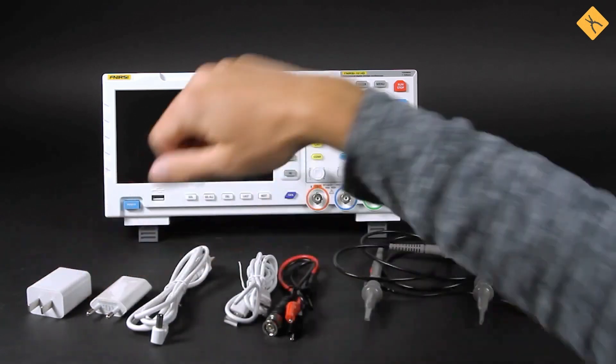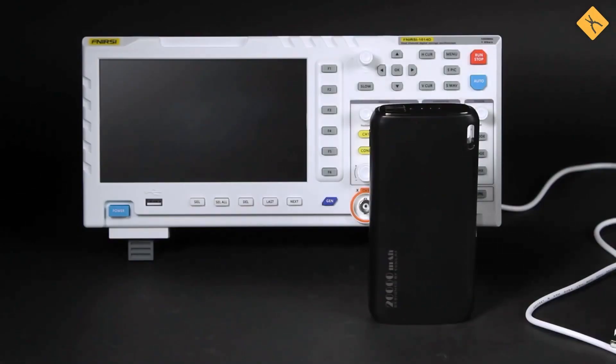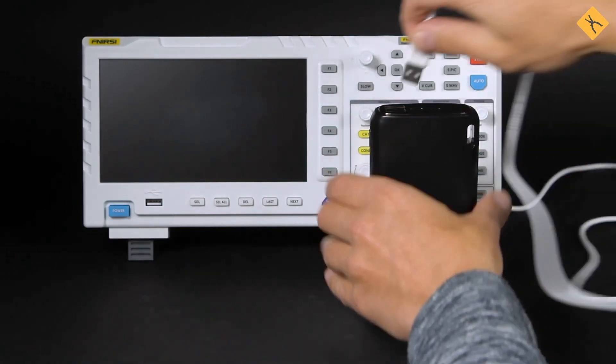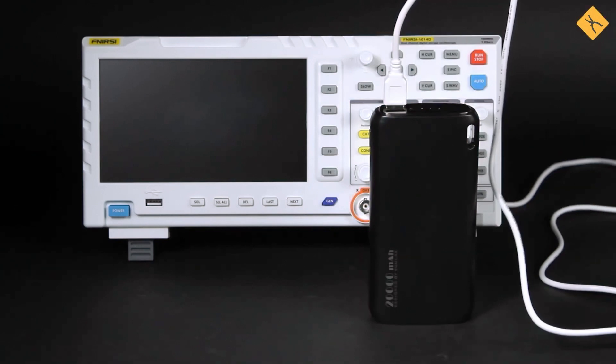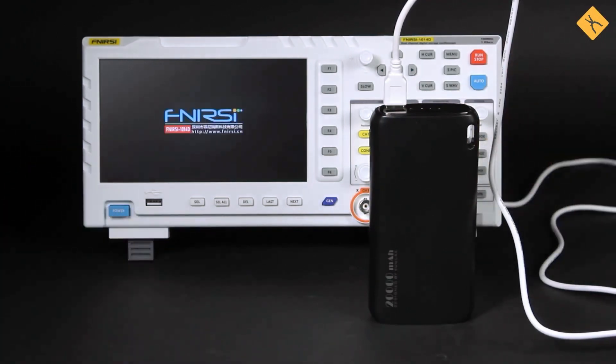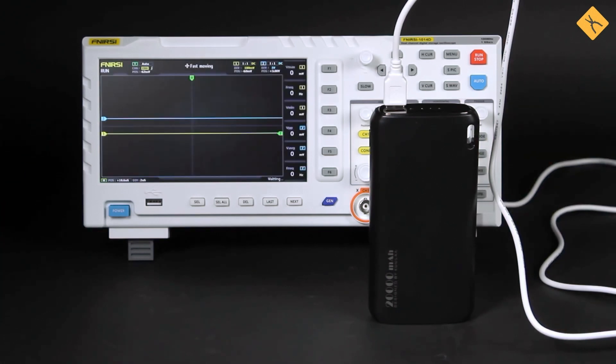The oscilloscope runs on a 5V power supply source. Thus, a regular power bank may provide sufficient power to use the 1014D in the field, whether or not power grid connection is available on site. As a result, power grid interference affecting the test signal is eliminated.